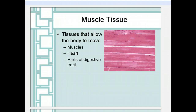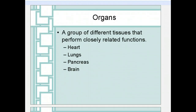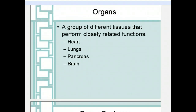Once you get multiple types of tissue working together, you have an organ. An organ is a group of different tissues that perform closely related functions. For example, your heart is made of mostly muscle tissue, but it also has connective tissue, nervous tissue, and epithelial tissue. The same thing goes for your lungs, your pancreas, and your brain.